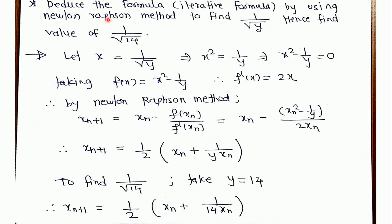For the second example, we derive an iterative formula using Newton-Raphson method to find 1/√y, where y is a fixed value. Then we use this formula to find the value of 1/√14. Our goal is to first find the iterative formula for 1/√y and then compute 1/√14.